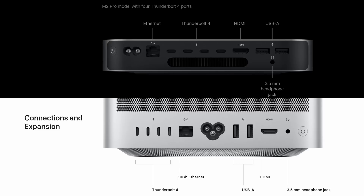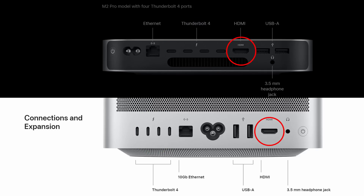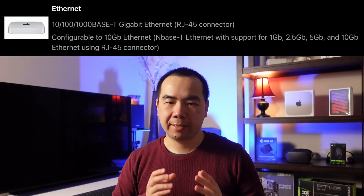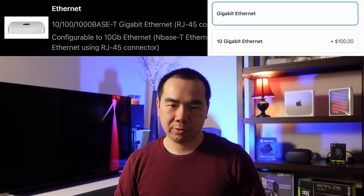When it comes to ports, the Mac Studio seems to have a clear advantage at first. On the backs of both machines, similar ports include a power button, power connector, Ethernet port, four Thunderbolt 4 ports, an HDMI port, two USB-A 5 gigabit per second ports, and a 3.5mm headphone jack. The Ethernet port on the Mac Studio comes standard with 10 gigabit, while the Mac Mini has gigabit Ethernet by default but can be upgraded to 10 gigabit for $100 extra.